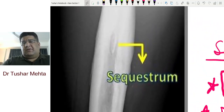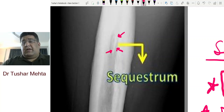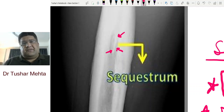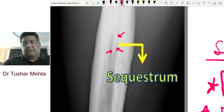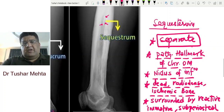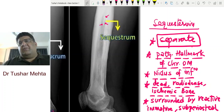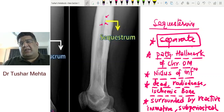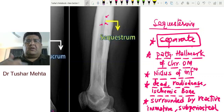When you see the sequestrum, you will identify that this piece of bone is typically more dense compared to the rest of the bone. Any bone that looks more white on an X-ray we call radio-dense. To summarize: sequestrum is a dead, radio-dense, ischemic, necrotic piece of bone — non-viable, non-vital — which is separate from the underlying viable healthy parent bone.